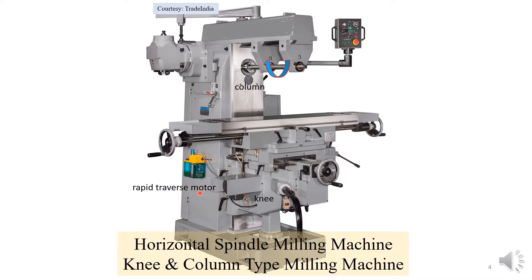There is also a rapid traverse motor, which is a constructional feature we will address in part 2. In a knee-and-column type milling machine you have a column and a knee, and the knee supports the table. The table can move in the longitudinal direction manually by rotating the handwheel using a screw-nut mechanism. It can also be fed in the cross motion and moved up and down. These motions can be manual or powered feed motions, meaning machining can be done in all three directions.